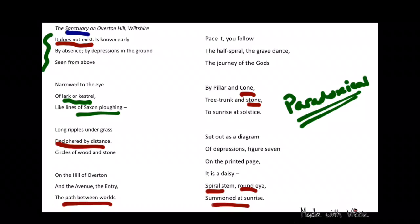So here she explores that. She says the avenue and the entry, which are the names given to the particular sections of these formations, and here she says the path between worlds.